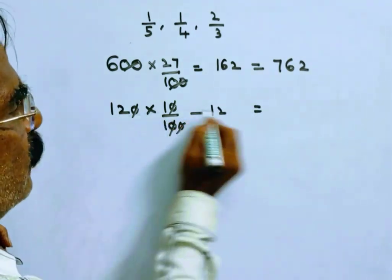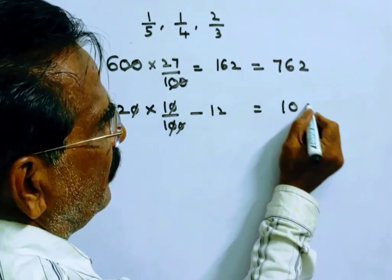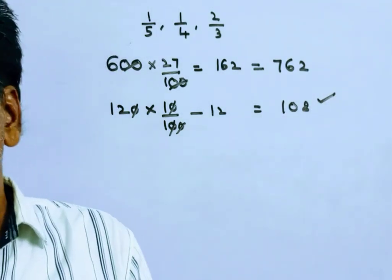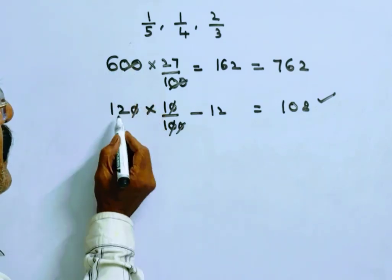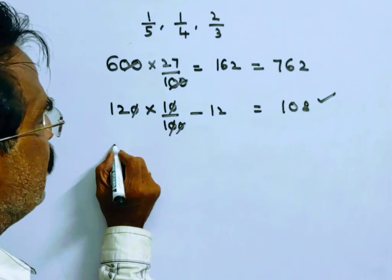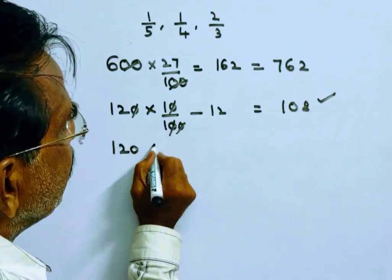Again, 1/4th of the remaining, 1/4th of the remaining: 600 minus 120 is 480. 1/4th of 480 is 120.